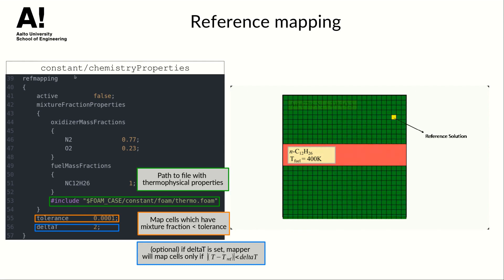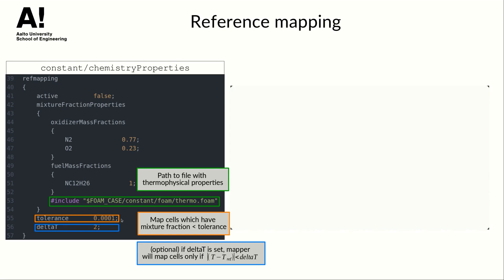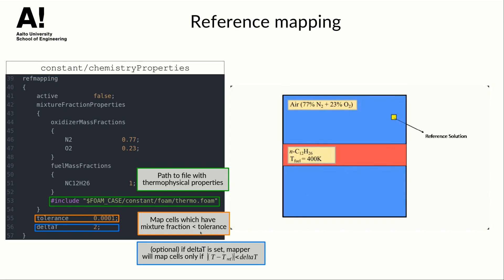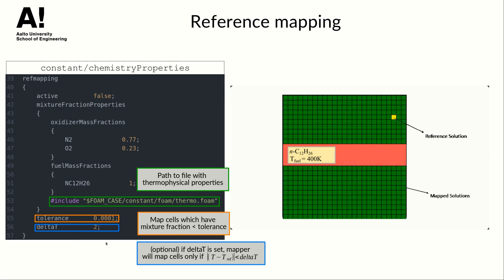This feature can be controlled in constant chemistry properties dictionary as shown here. First fuel and oxidizer composition needs to be set in order to enable the calculation of the mixture fraction. This also requires molar weights of species which are provided by inclusion of the thermochemical properties dictionary. Then the criteria for the choice of the mapped cells is set using tolerance keyword here. Solver will map cells which have the mixture fraction smaller than the tolerance and then there is an optional additional temperature criteria which will limit mapping only to cells which has temperature difference smaller than delta T.